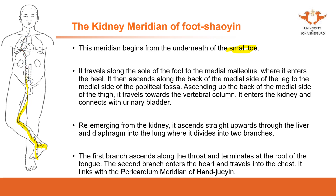One branch ascends along the throat and terminates at the root of the tongue. The second branch enters the heart and travels into the chest, linked to the pericardial meridian. So this is the kidney meridian — it also travels from the foot through the abdomen and chest.